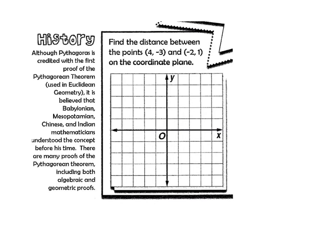Let's just learn a little bit of the history. Although Pythagoras is credited with the first proof of the Pythagorean theorem, it's used in Euclidean geometry, it is believed that Babylonian, Mesopotamian, Chinese, and Indian mathematicians understood the concept before his time. There are many proofs of the Pythagorean theorem, including both algebraic and geometric.